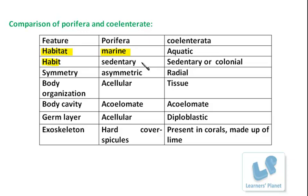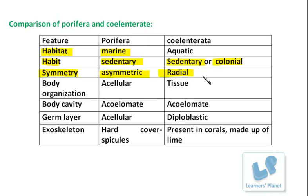Next is habit. Porifera organisms are sedentary — they are always attached to some substratum. Whereas Coelenterata can be either sedentary or free living, and it may be colonial or it may lead a solitary life. Regarding symmetry, Porifera are asymmetric — they have an irregular body shape or structure. But Coelenterata shows radial symmetry — from each plane they look similar, having an equivalent design when observed through different planes.